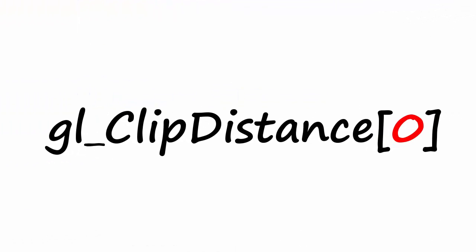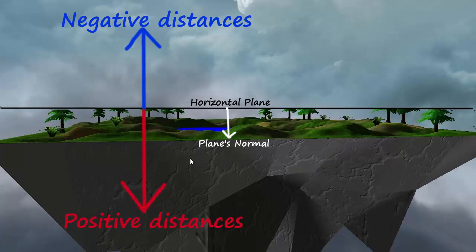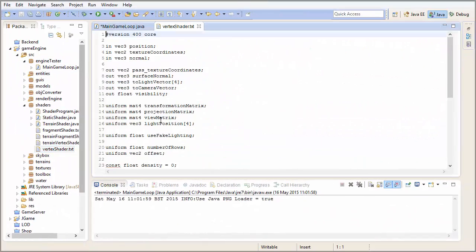The gl_ClipDistance variable allows us to tell OpenGL how far each vertex is from the clipping plane. OpenGL doesn't care about the clipping plane at all — it just wants to know the signed distance of each vertex from that plane. If this distance is positive then the vertex is on the inside of the plane and won't get culled. If the distance is negative then the vertex is on the outside, on the culling side. OpenGL interpolates these distances over the whole geometry, and any part with a negative distance is culled and isn't rendered, while anything with a distance of 0 and over is rendered.